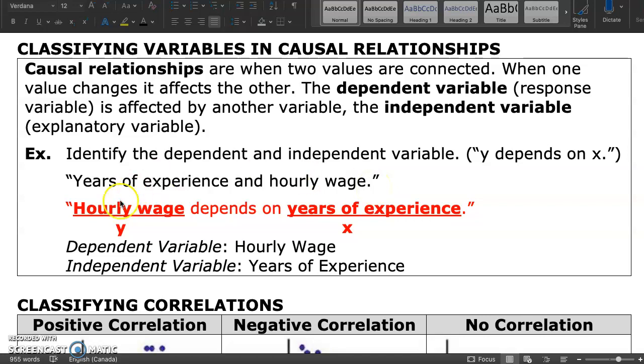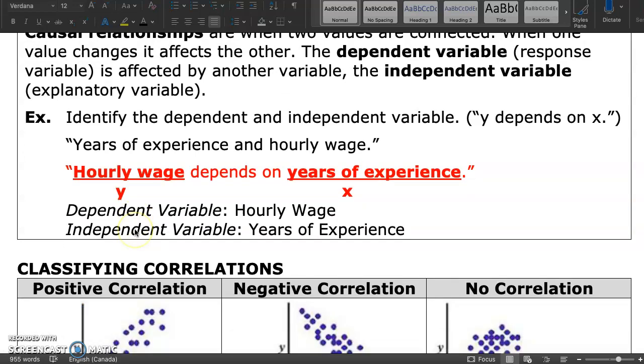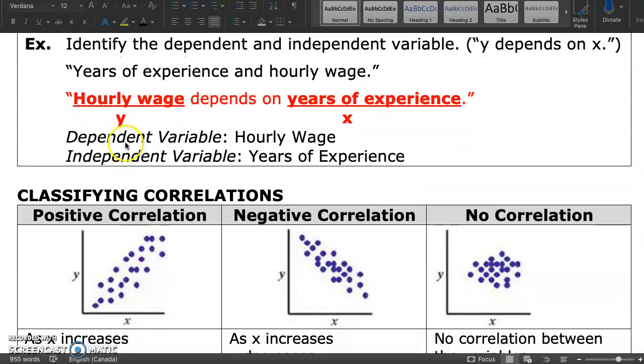If you were to say this as hourly wage depends on years of experience, this makes a lot more sense than years of experience depends on hourly wage. One variable is said to be causing the other. So, the dependent variable is hourly wage, and the independent variable is years of experience.